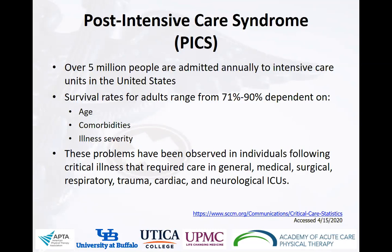Here in the U.S., outside of COVID-19, we see over 5 million people admitted to ICUs annually, and the survival rate ranges anywhere from about 70% to 90%, depending on the person's age, comorbidities, and certainly the severity of illness. We've seen post-intensive care syndrome in survivors of critical illness cared for in a variety of ICUs, including general, med-surg, cardiac, respiratory, trauma, and neurologic ICUs. So while we have yet to have specific data related to PICS and survivors of COVID-19, it is certainly plausible that individuals with COVID-19 may also be susceptible to the problems that people with PICS face when discharged from the hospital.